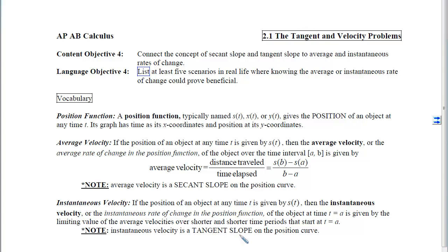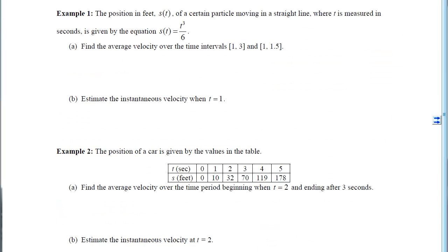With example 1 now, we can see how we can apply these concepts of average and instantaneous change in the context of position and velocity problems. So here we are given the position, S(t), of a certain particle moving along in a straight line, where t is measured in seconds, and the position is measured in feet, and we have the position at any time will be t cubed divided by 6. We're looking for an average velocity or a secant slope for two different time intervals, and then we're also looking for the instantaneous velocity. Because we're going to have to compute three different slopes using this function, I'm going to go to the calculator and plug the function in.